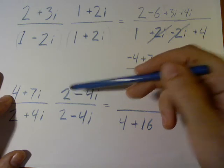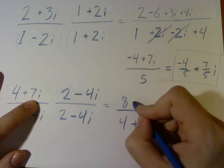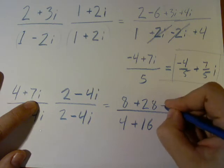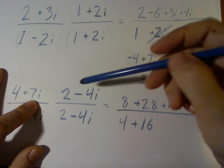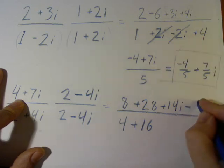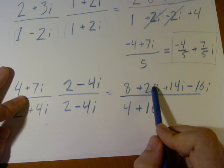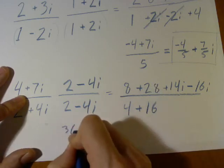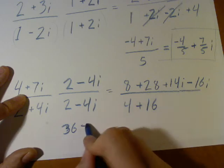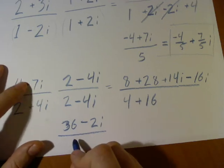We have 4 times 2, 7i times negative 4i, that becomes positive 28. 7i times 2, that's positive, so we have 14i. And 4 times negative 4i becomes minus 16i. Let's simplify and reduce. We have 36, and then the 14 minus 16, minus 2i. Divide by 4 plus 16, which is 20.